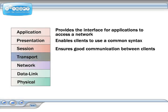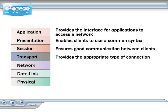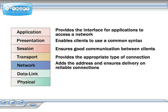At the transport layer, either a reliable or unreliable protocol is chosen to make the connection to the recipient, depending on which type is needed by the communicating clients. At the network layer, the destination address is added to each packet. Also, when a reliable connection is made at the transport layer, protocols at the network layer do the tracking and checking needed to ensure the connection's reliability.